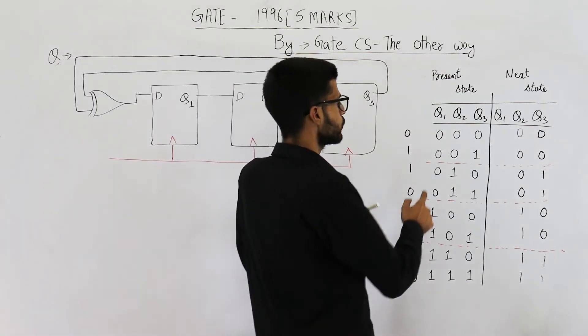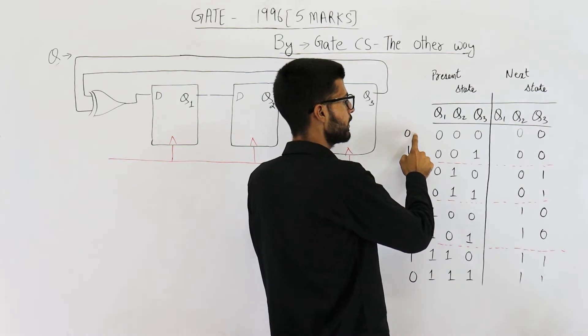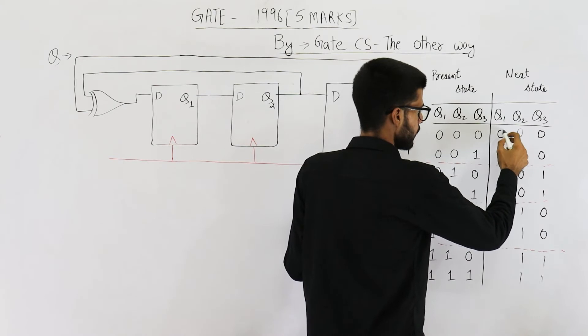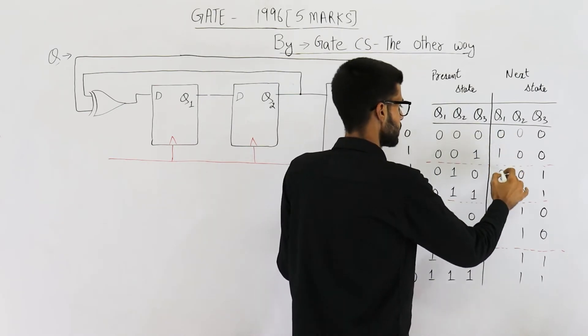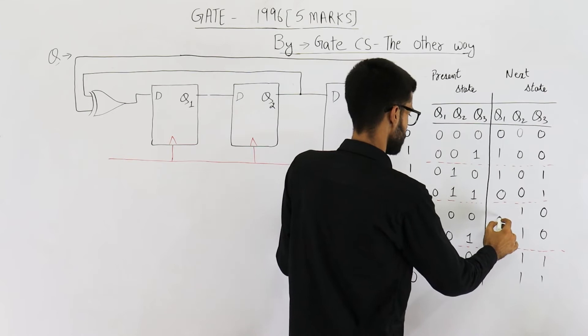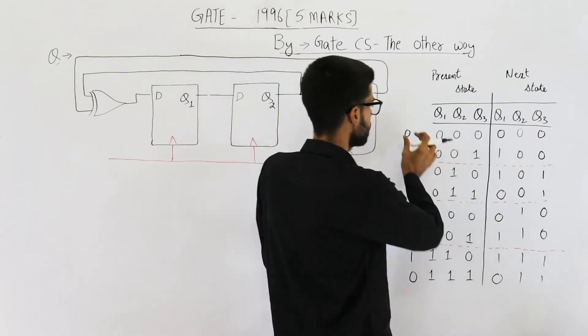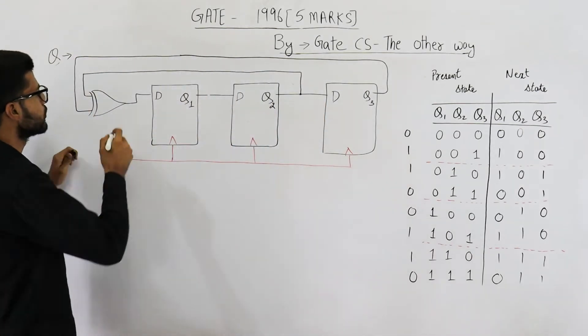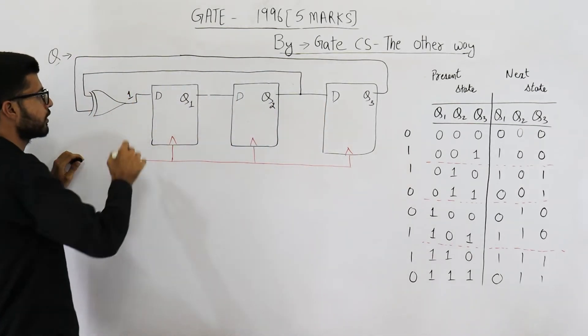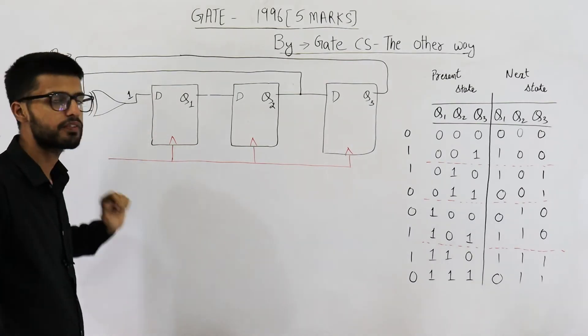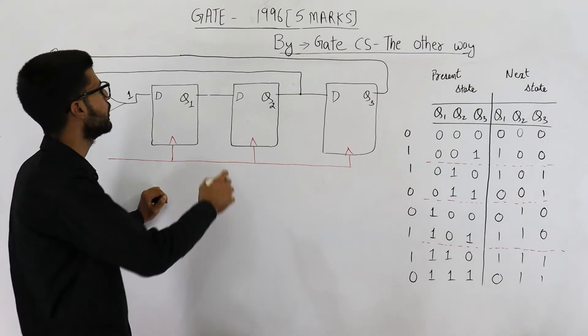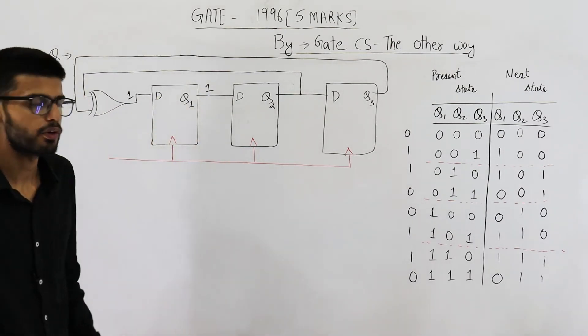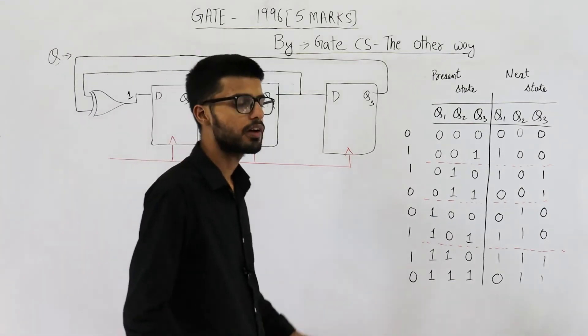So I've just noted down the output of this XOR gate for these values of Q2 and Q3. This XOR gate's output will be copied as it is on Q1 whenever a clock signal is received. So the XOR gate's output is 0 - whenever you see a clock signal, this 0 will be copied as it is in the output Q1. So I'm writing 0 here. Similarly, this is 1, 1, this one is 0, this one is also 0, 1, 1, 0. This column is copied as it is here. This is how a D flip-flop functions. Anyways, we have got the truth table.